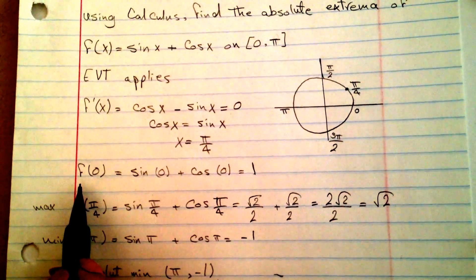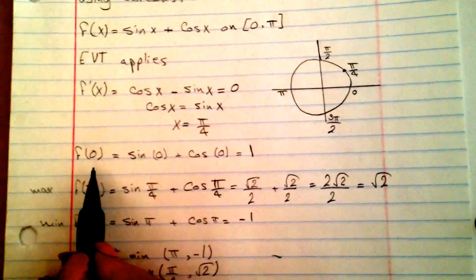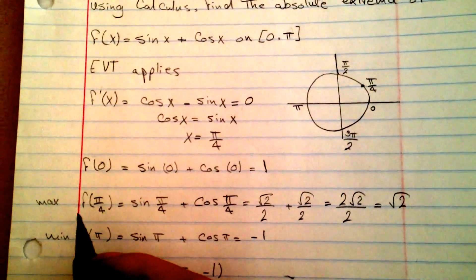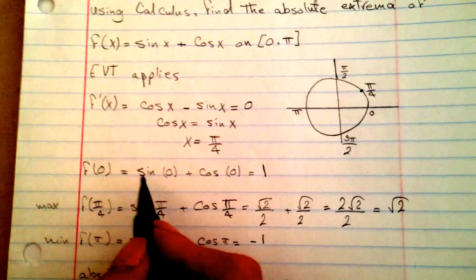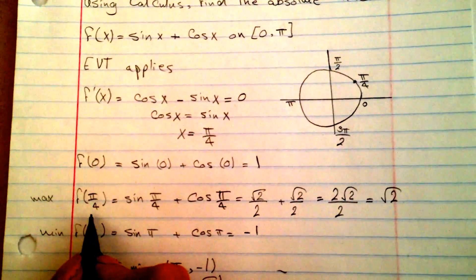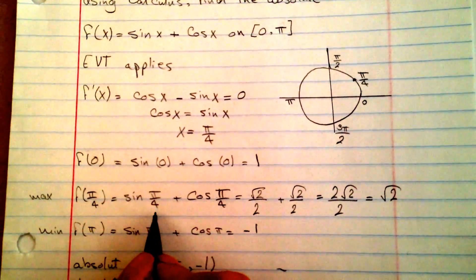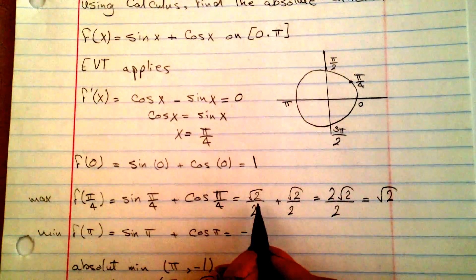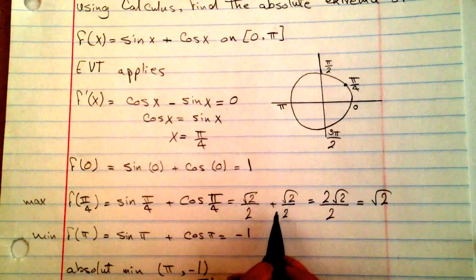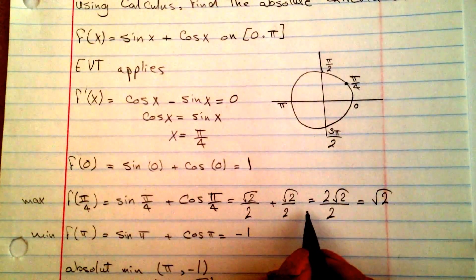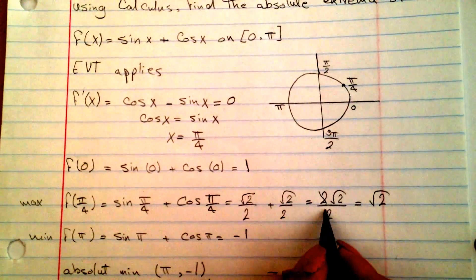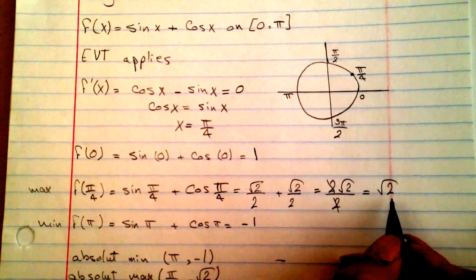Now we're going to plug in f of 0, f of pi over 4, and f of pi to find which is the absolute minimum and absolute maximum. f of 0 equals sine of 0 plus cosine of 0 equals 1. f of pi over 4 equals sine of pi over 4 plus cosine of pi over 4, which equals square root of 2 over 2 plus square root of 2 over 2, giving us 2 square root of 2 over 2, which simplifies to square root of 2.